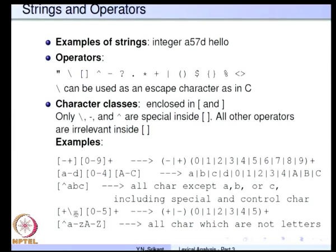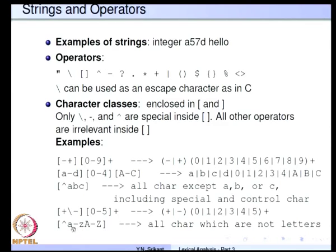More examples: [+\-][0-5]+ means either plus or minus followed by digits 0 through 5. Here the backslash minus stands for the minus character itself, used because when minus appears as a second character inside brackets it would be interpreted as a range operator. And [^a-zA-Z] means all characters which are not letters — so all digits, special characters etcetera are included in this set.